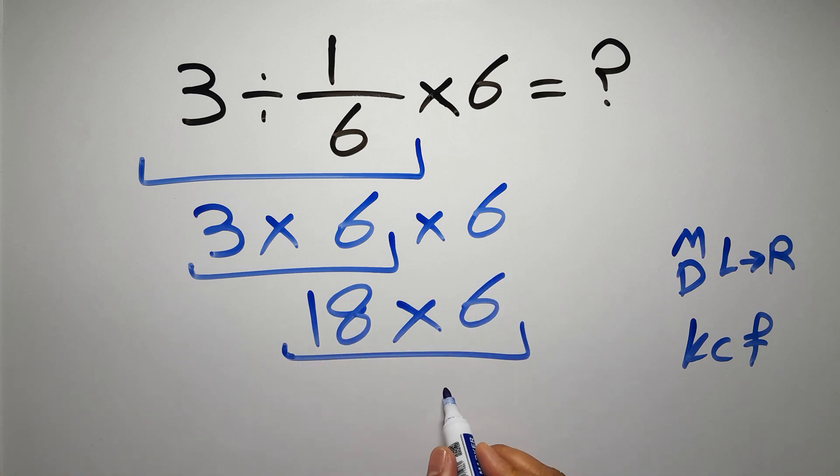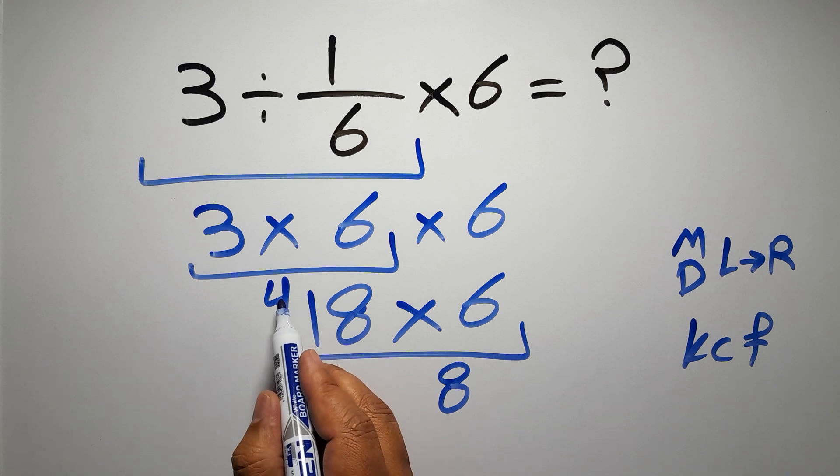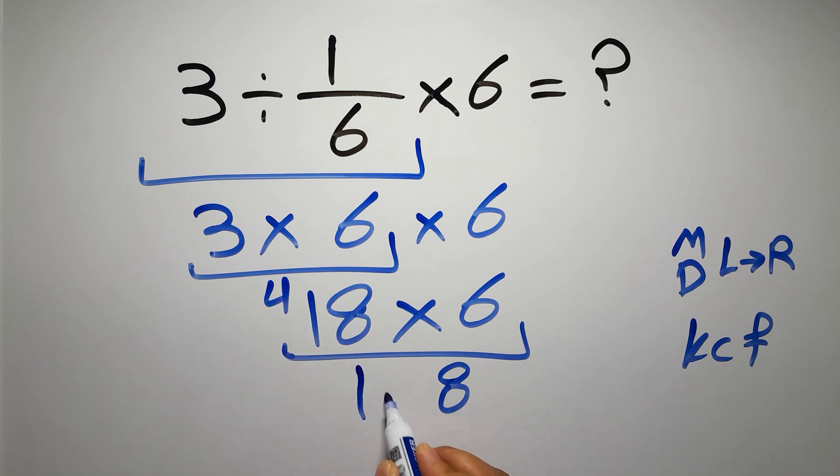Gives us 48. We write 8 here and carry 4 here. Six times 1 gives us 6, and 6 plus 4 equals 10. So we have 108. The correct answer is 108, and this is our final answer to this problem.